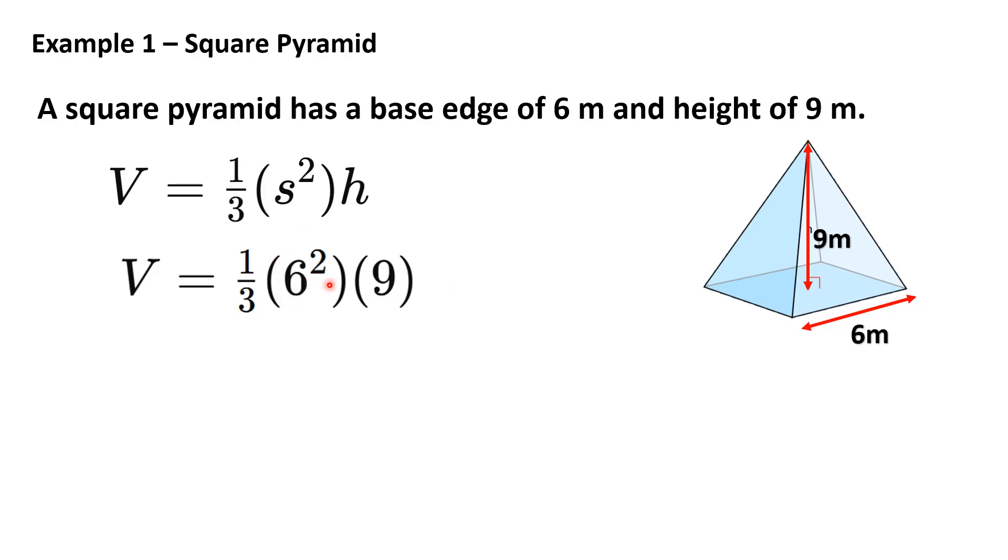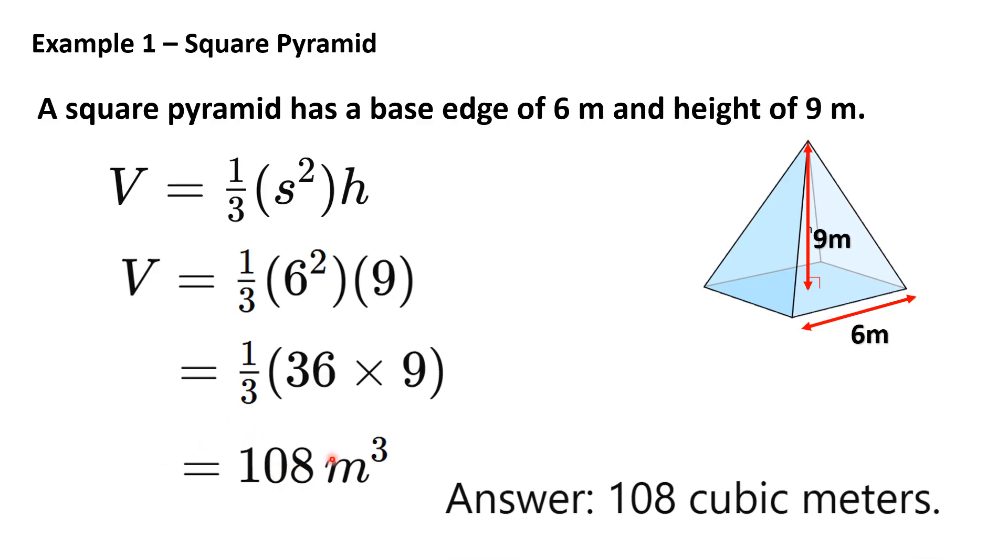So six times six, that is 36. Then 36 times nine times one third, that is 108 cubic meters. So this is our answer.